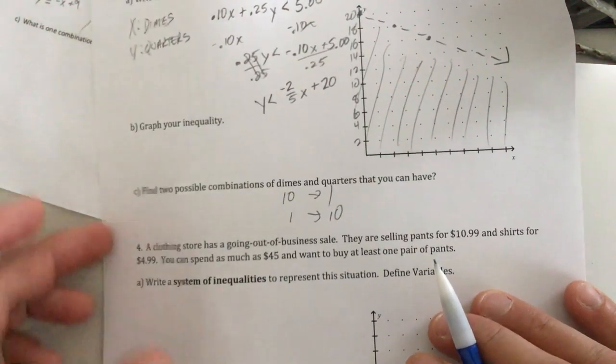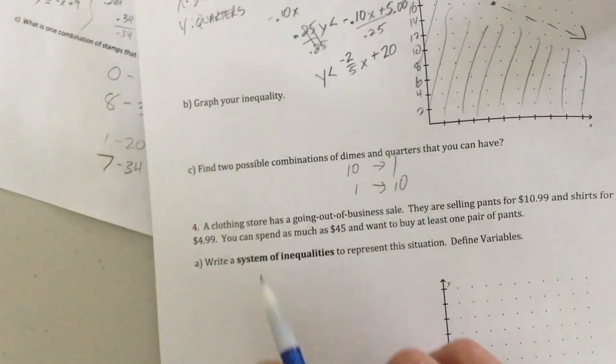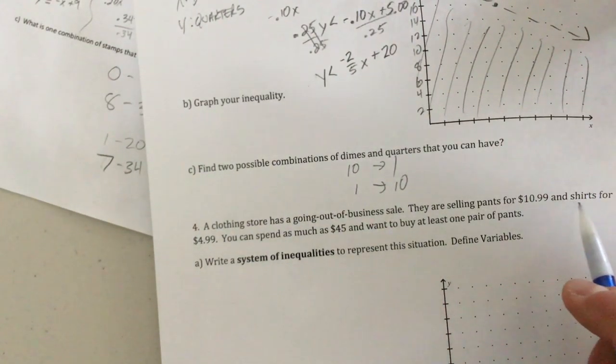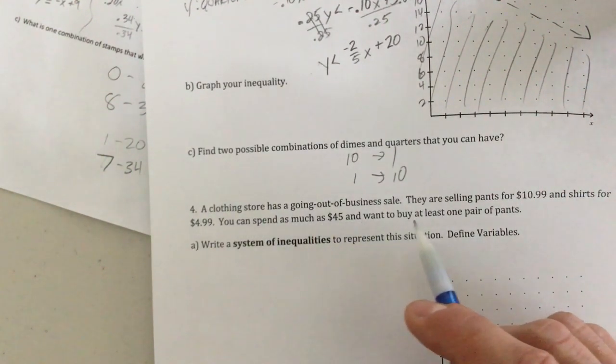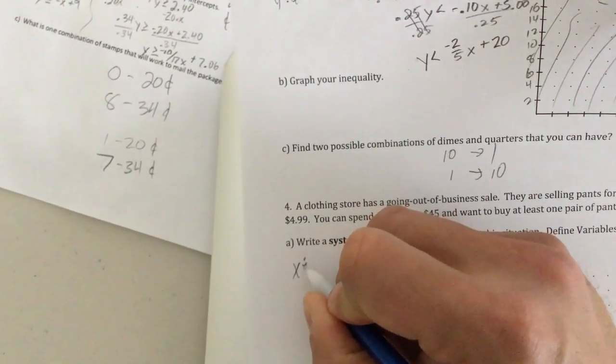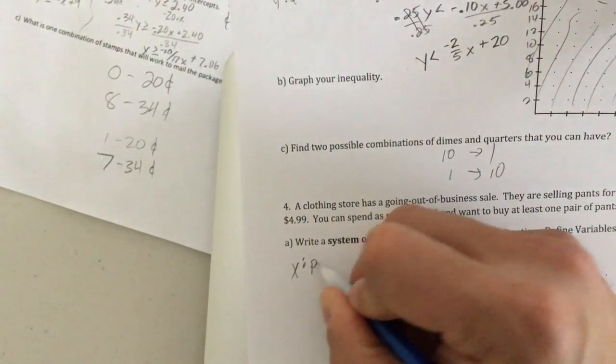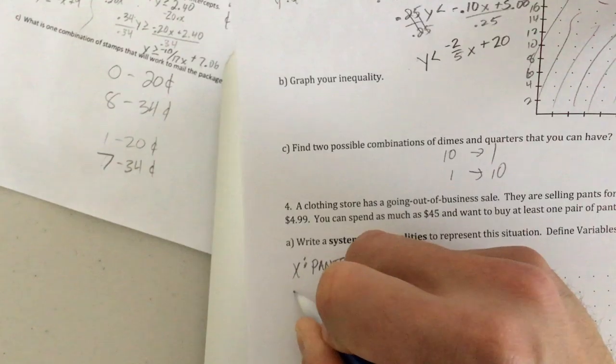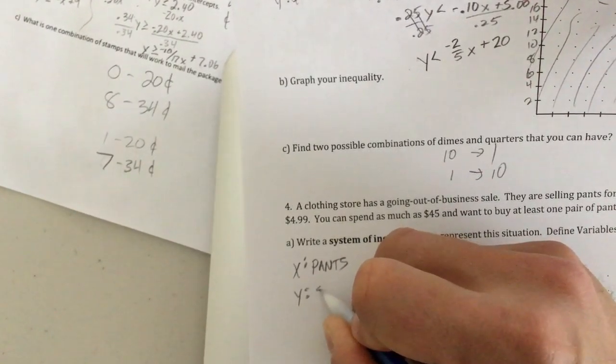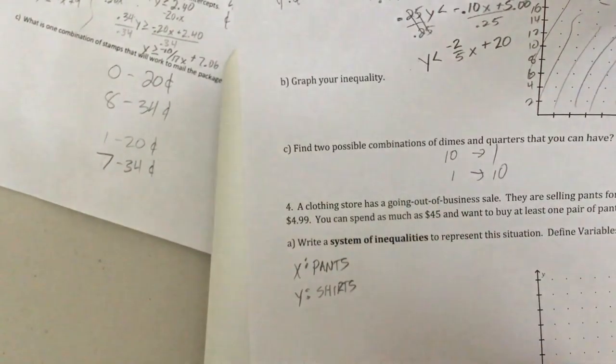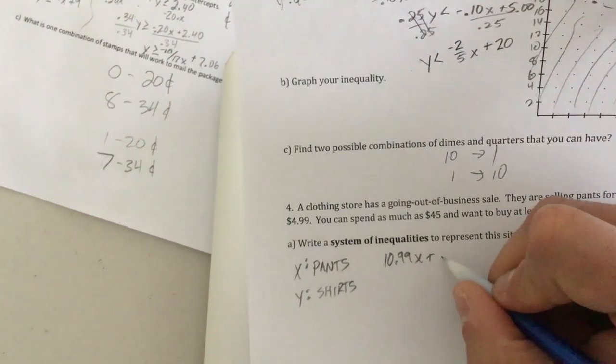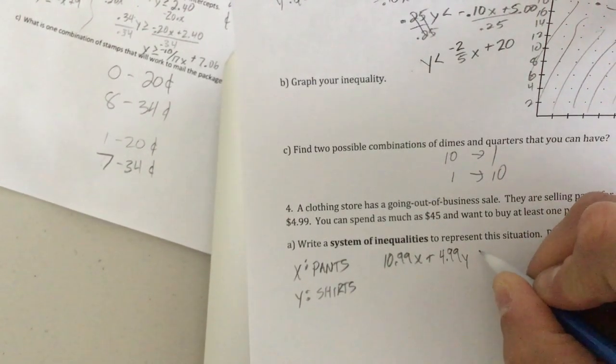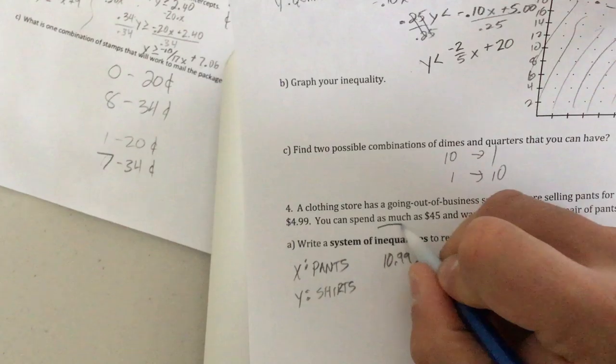The next one's a little more difficult. That's where I want to spend our time. A clothing store has a going out of business sale. They're selling pants for $10.99 and shirts for $4.99. You can spend as much as $45 and want to buy at least one pair of pants. So I'm going to make X the pants and I'm going to make Y the shirts.